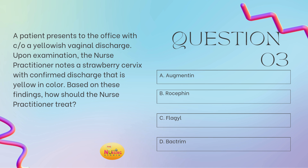Based on these findings, how should the nurse practitioner treat? Again, we're looking for the diagnosis to see if it has been provided, and it has not. So we need to look at the assessment findings. This patient comes in complaining of a yellowish vaginal discharge, so of course you're going to do further assessment. On exam, the nurse practitioner notes the strawberry cervix and confirms the yellow discharge. These are classic presentations. I tell you: when we have those classic key identifiers — when I say strawberry cervix, you should say trichomonas, especially when they say yellow discharge is associated with it.